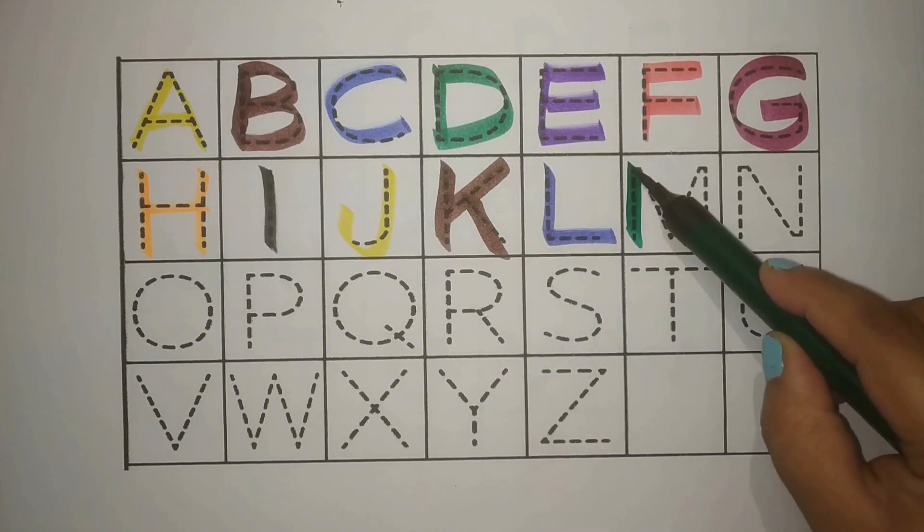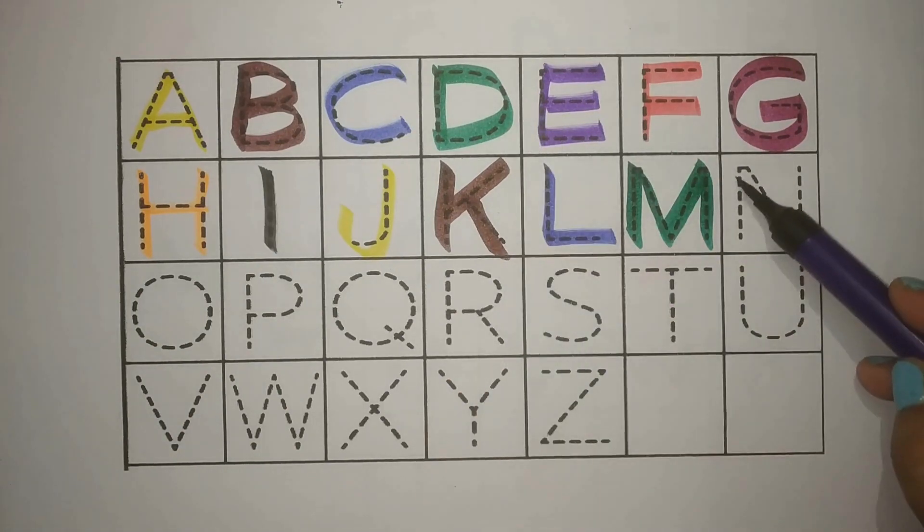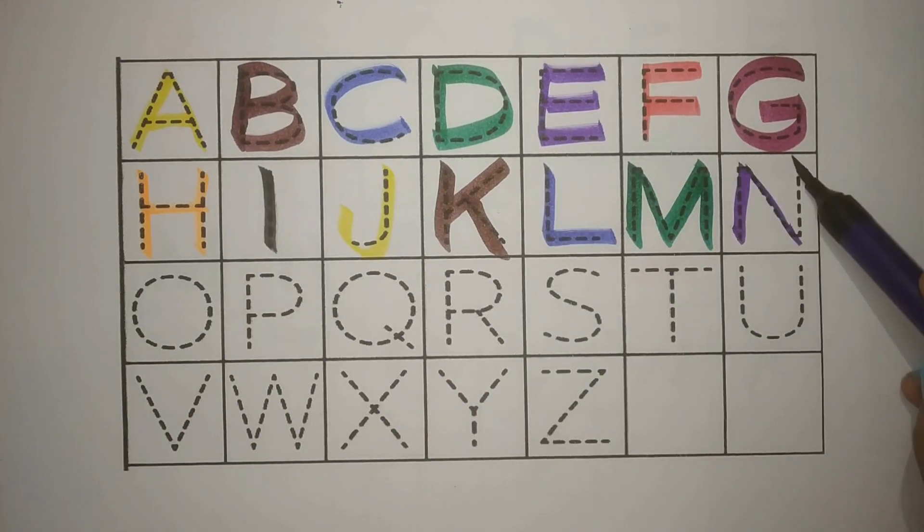Green, M, M for monkey, bandar. Bandar, bandar, reta, pedh, par. Purple, N, N for nose, lark.